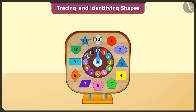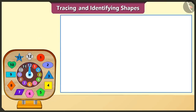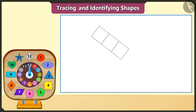Friends, now let's trace some of these shapes and draw a picture. First of all, we will trace the square shaped block and draw one, two, three squares.